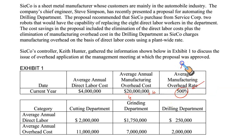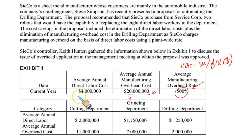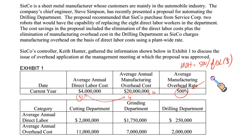In other words, manufacturing overhead is 500% of your direct labor cost, or simply, for every $1 spent on direct labor, overhead is $5. Either 500% of direct labor or $5 per $1 of labor cost.